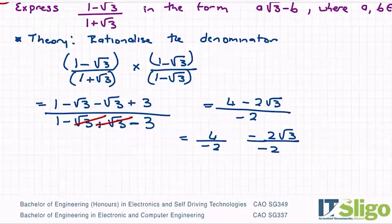So four over minus two is minus two. We have minus over minus here, which is plus. And the twos cancel. And we end up with root three.